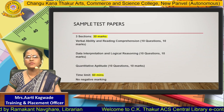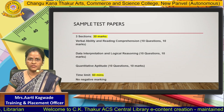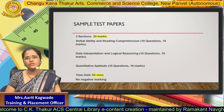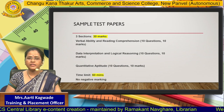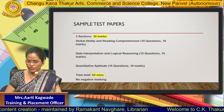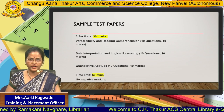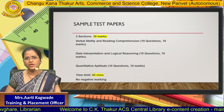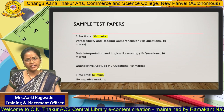The training and placement cell has designed a set of papers for you to get an idea as to how you compete with the rest. These sample papers basically have three sections, 30 marks each. The first section is verbal ability and reading comprehension — 10 questions of 10 marks each. Second is data interpretation and logical reasoning — again, 10 questions of 10 marks. Third is quantitative aptitude — again, 10 questions of 10 marks. Altogether, the total time limit for this test is one hour and there is no negative marking.